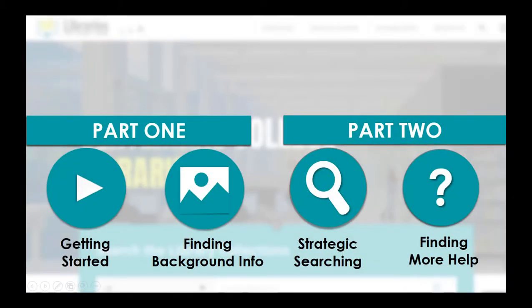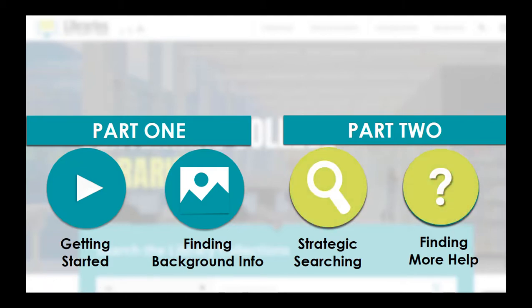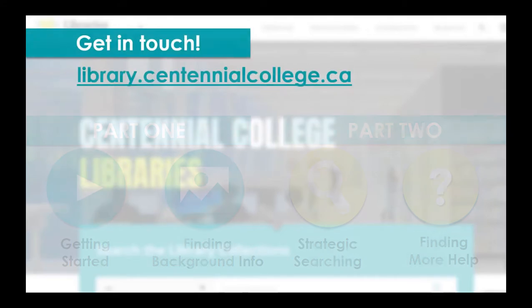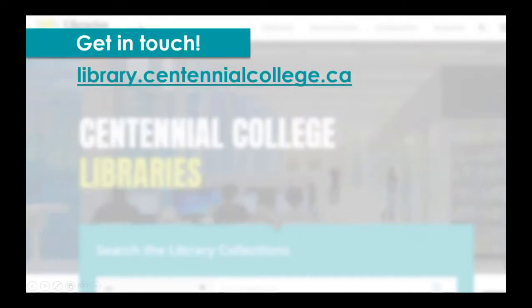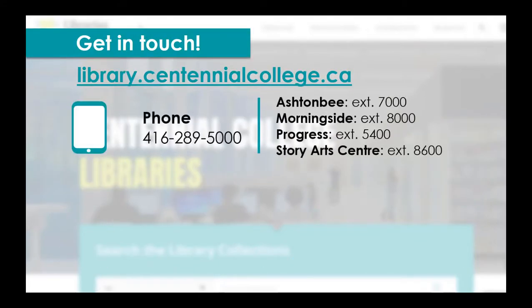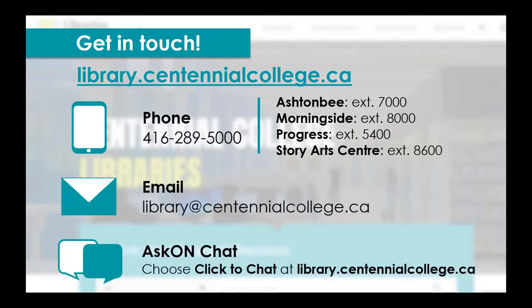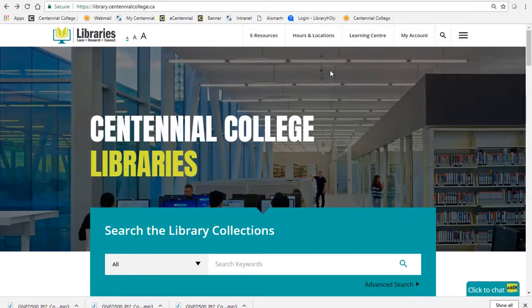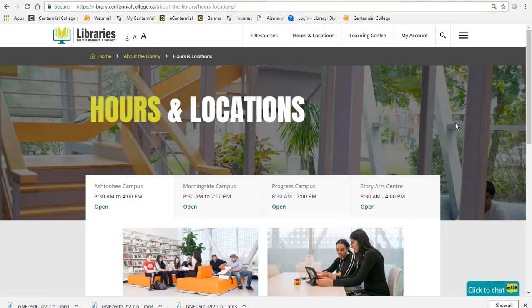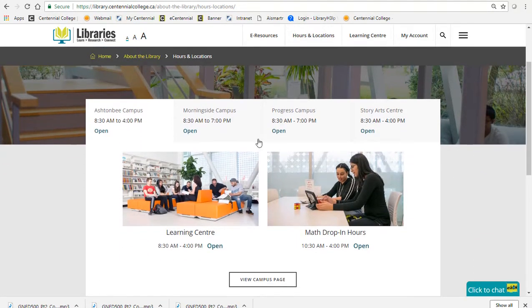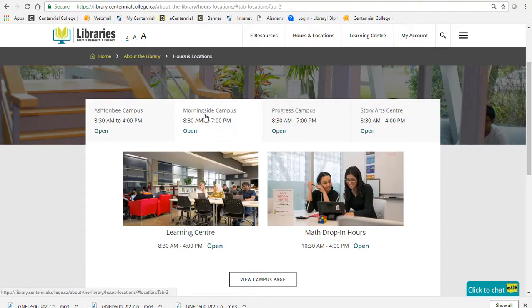You now know how to use the library website to search strategically for information for your assignment. But what if you need more help with your research? There are lots of ways to get in touch: give us a call, send us an email, or chat with us on AskOn, our virtual reference service. You can also drop by the library and visit us in person. Hours and directions to all of our campus libraries are available on our website.